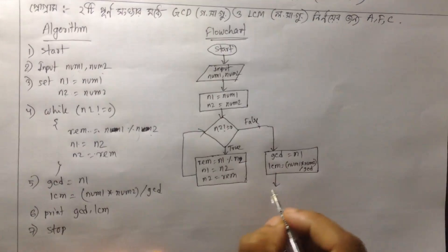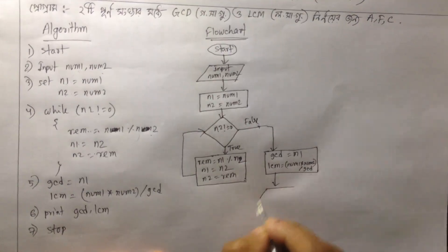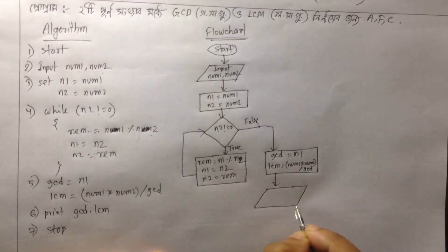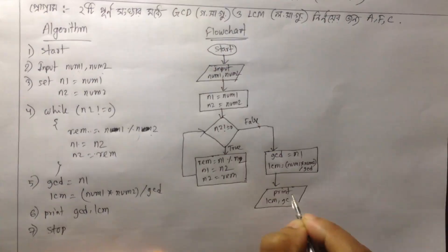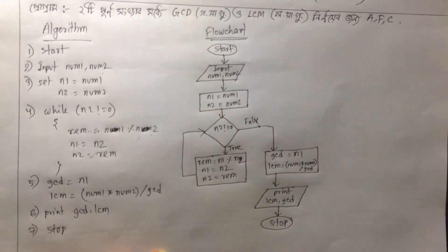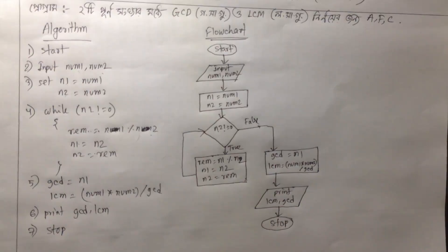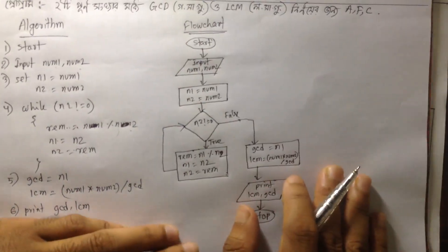What we will do is find GCD, and from that we can calculate LCM. We will print LCM and GCD. When either number becomes zero, the loop stops.